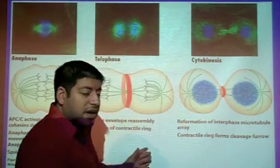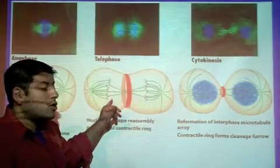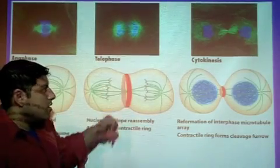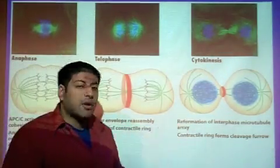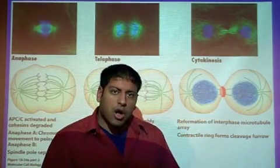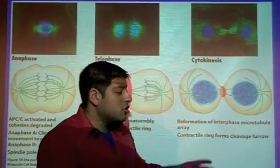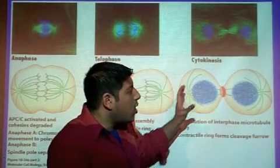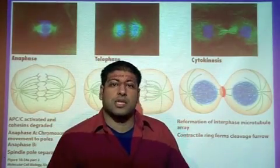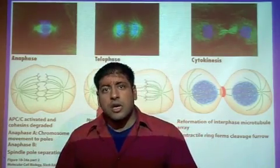So in telophase we reestablish the nuclear envelope around two new nuclei, and actin and myosin 2 assemble at the center. In cytokinesis, the actin-myosin crossbridge cycle causes contraction, leading to the final pinching off of one cell into two new daughter cells. That's the overall process of mitosis as needed for this cell biology course.